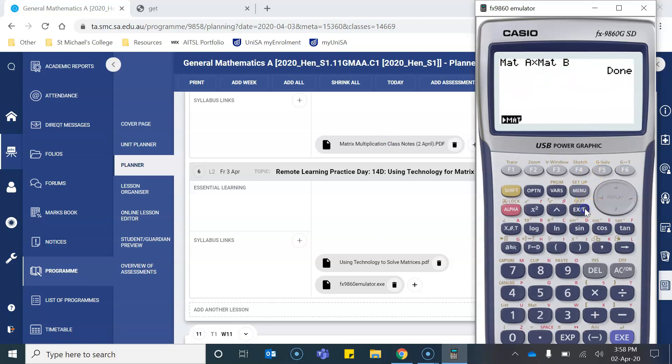Let's have a look if our calculator will do that. If I go 2 times matrix, again, shift, matrix, alpha A, and click execute, you'll notice that all of these values have been doubled. That's another function that we can do with the calculator.